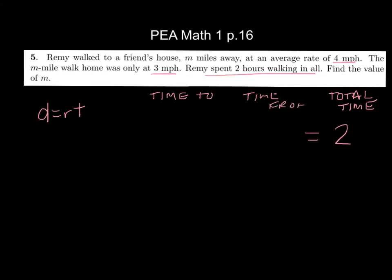So what's my expression for time to a friend's house? Yes, John. Okay, so m over 4, because, and this is what I did, I looked at this distance equals rate times time right here, and I said, okay, if I want to solve that for time, I would divide both by r. So time equals distance over rate. So what I'm going to do is for the time there, I'm using the distance there, which is m, divided by the rate there, which is 4.